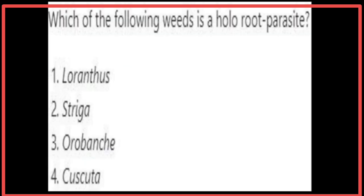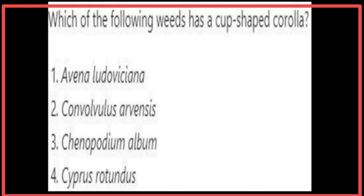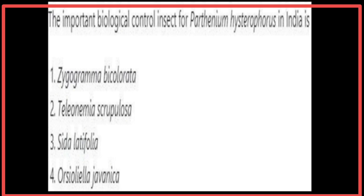Orobanche is a holoroot parasite. Convolvulus arvensis has a cup-shaped corolla. The important biological control insect for Parthenium hysterophorus in India is Zygogramma bicolorata.